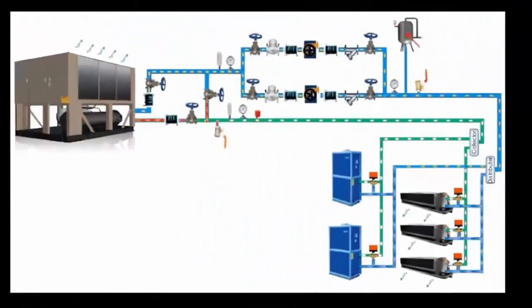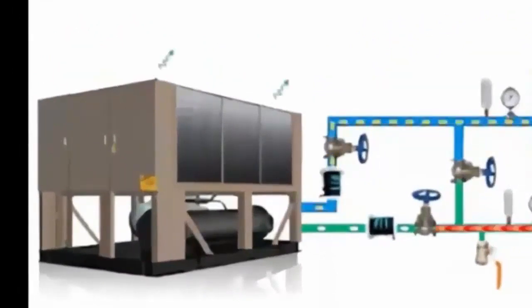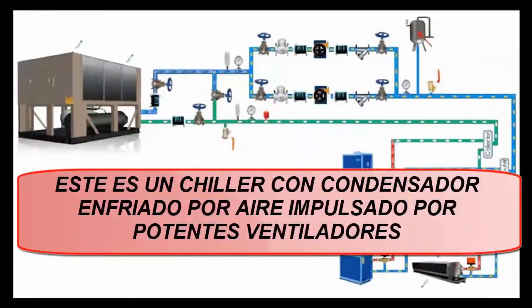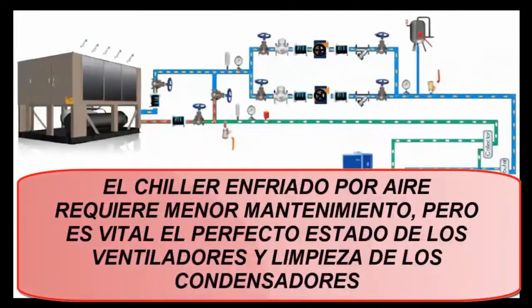17. As we are seeing in the animation, we have a chiller with an air-cooled condenser. 18. Let us remember that this type of machine is usually used in applications with low and medium thermal loads. 19. Although this type of chiller is less efficient than the one with a water-cooled condenser, it has the advantage of requiring little maintenance and a simpler installation or piping circuit.